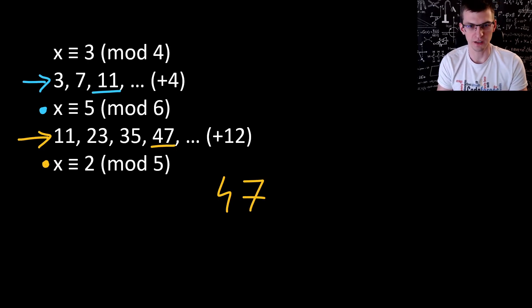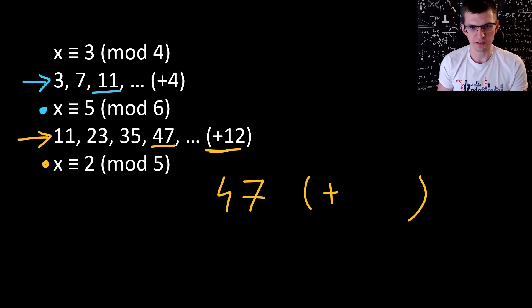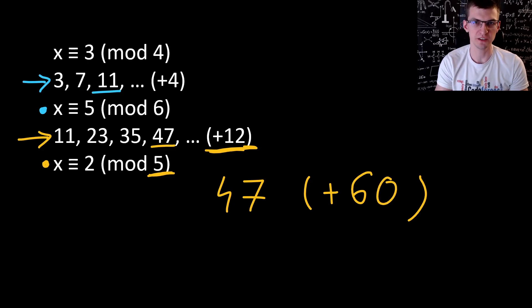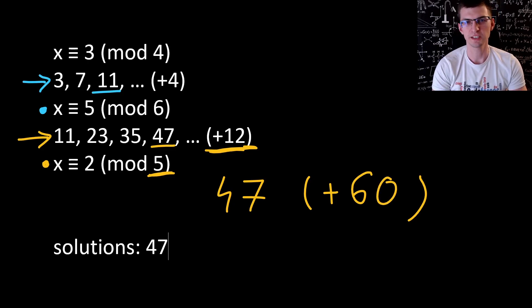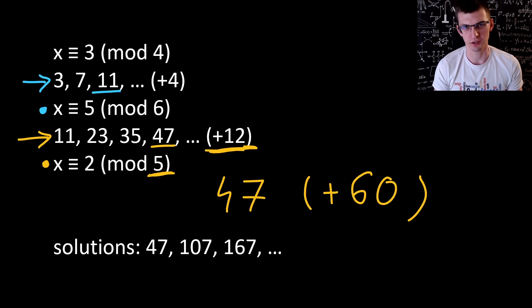Not the only one. We can increase it by the least common multiple of 4, 6, and 5 — all moduli values. It's easiest to compute it by taking the previous LCM and the new modulo's value and computing their LCM. In this case that's 60 — the smallest value divisible by 12 and 5. The smallest solution is 47, but then there's 107, 167, 227 and so on.